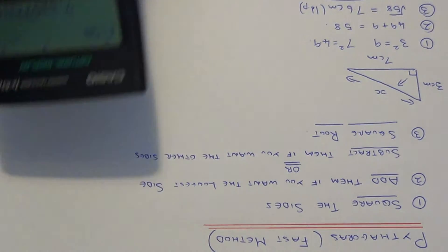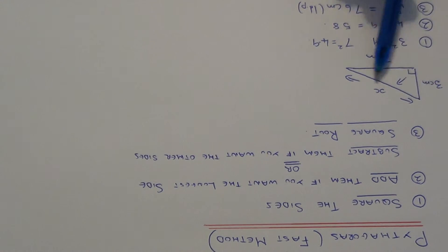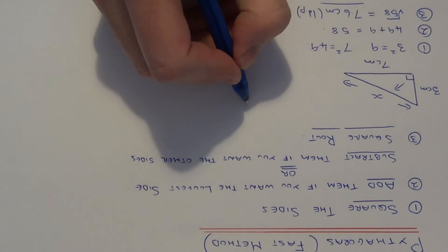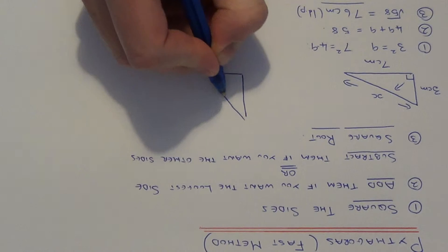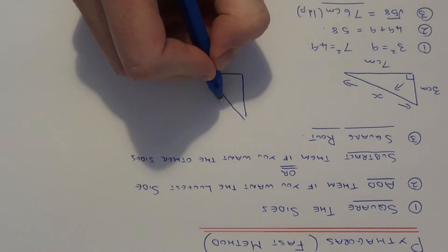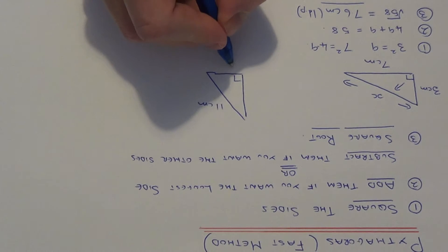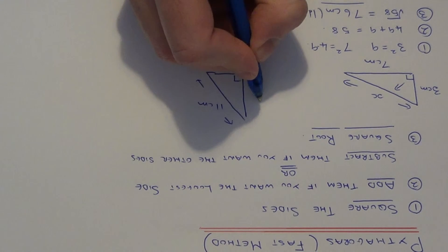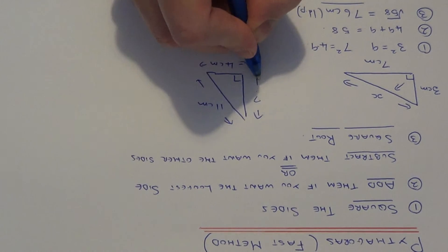You can see that looks about the correct length for that triangle. So let's do one more example. So we have got this side of the right angled triangle which is eleven, and we have got this side which is four centimeters. And we need to work out this side here.